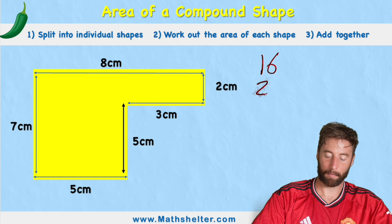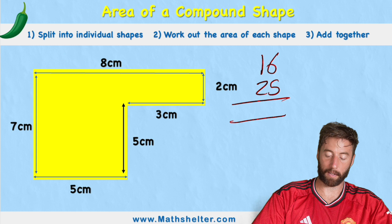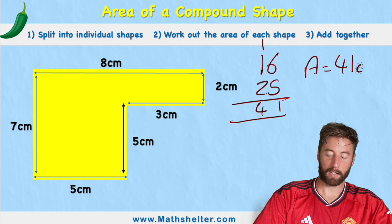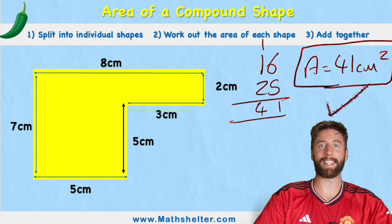So 16 plus 25 equals, in the ones, 6 plus 5 is 11, and then in my tens, 1 plus 1 is 2, plus the 2 is 4. So I have 41 centimeters squared. Easy.